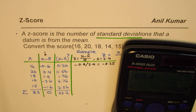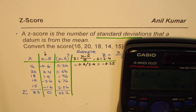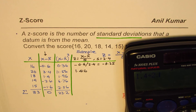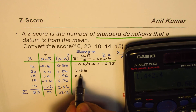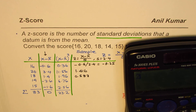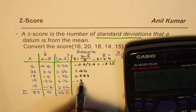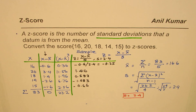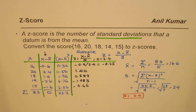Likewise, let's calculate the remaining z-scores. 3.4 divided by 2.4 equals approximately 1.416. 1.4 divided by 2.4 equals approximately 0.583. −2.6 divided by 2.4 equals approximately −1.083. And −1.6 divided by 2.4 equals approximately −0.667. A z-score represents the number of standard deviations a datum is from the mean — positive means above the mean, negative means below.